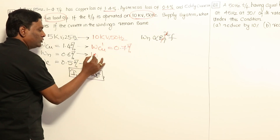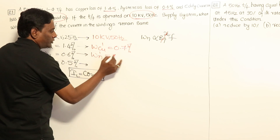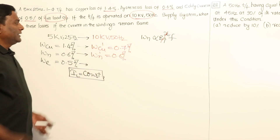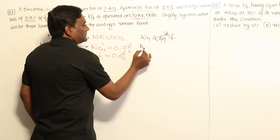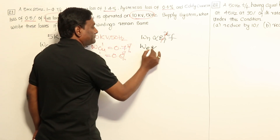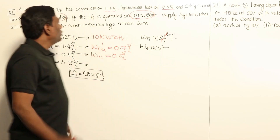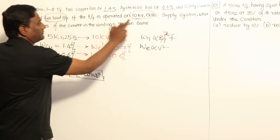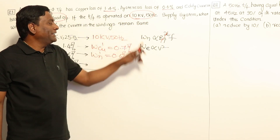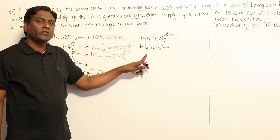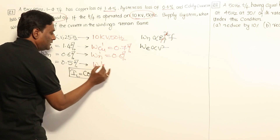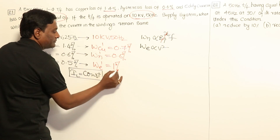So the new hysteresis loss becomes 0.6%. Now, eddy current loss is independent of frequency and directly proportional to voltage squared. My voltage is doubled, so eddy current losses increase by four times. So the new eddy current losses will be 1%.